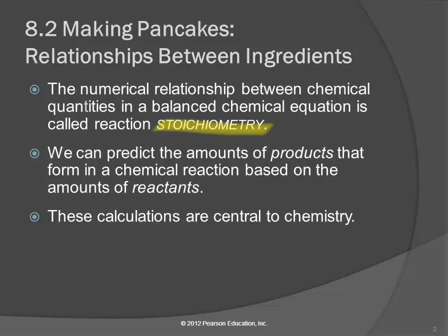So if I started out with 5 grams of this, how many grams of product am I going to end up with? This is very practical in terms of chemical engineering, where they're producing chemicals from raw materials. We need to know how much starting material we need to produce, say, 5 tons of sodium phosphate. These sorts of calculations are really, really important.